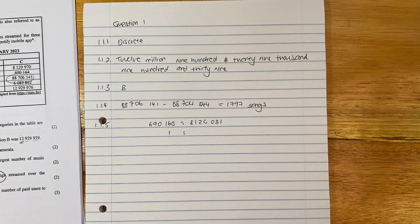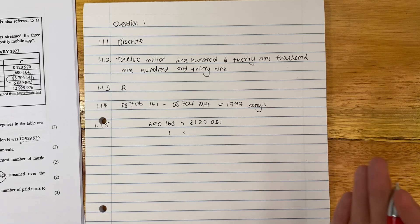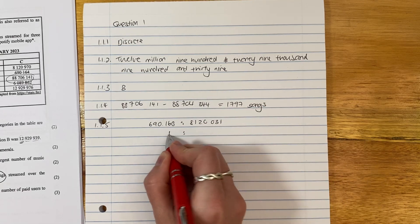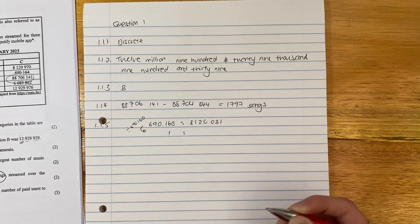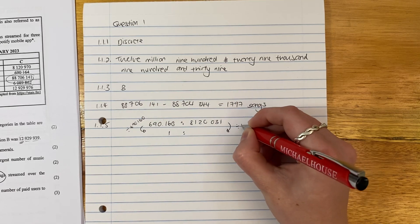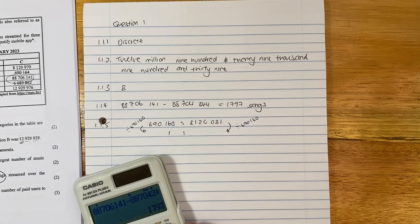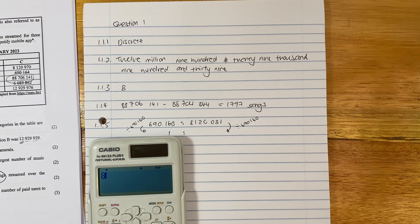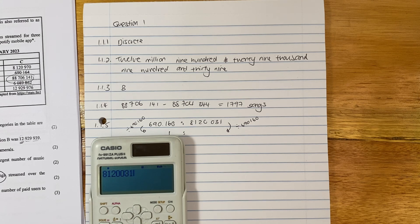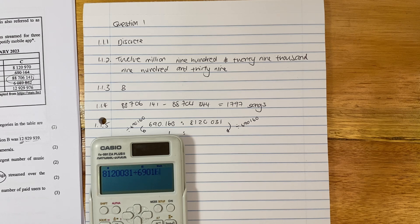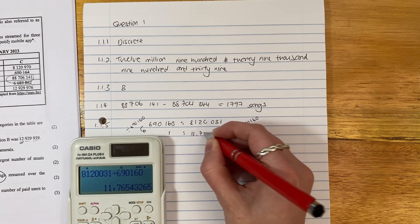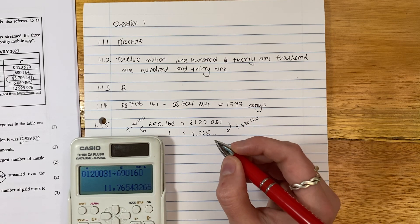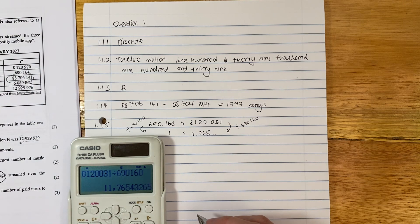Now it wants us to write it as a unit ratio. So we can't just be up in here making up our own things. So what do I have to do to that to get to one? Well, I have to divide it by itself. But remember, in a ratio, what did I do to the one side? I have to be doing to the other side. That is a rule. You can't just be changing things. So I said, 8120031 divided by 690160. Well, be careful you type in correctly. It's a common error. And you just say to 11.765 dot dot dot.